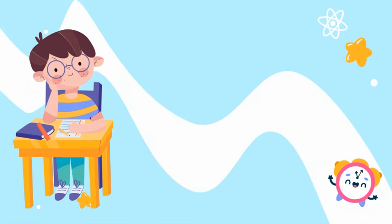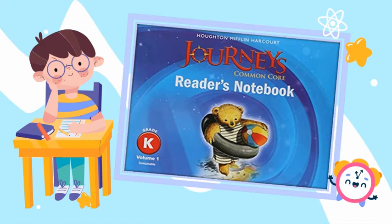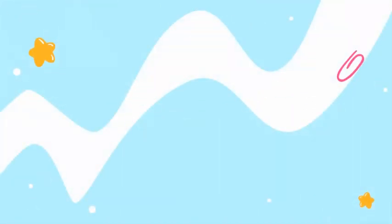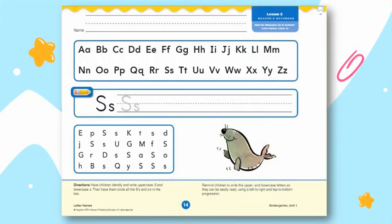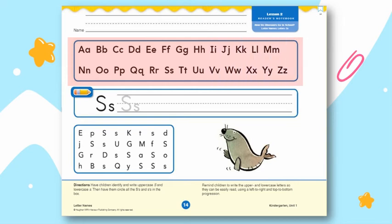Now that we know the letter S and its sound, let's grab our Journey's Reader's Notebook and open it to this page. Are we on the same page now? Are you ready? Do you have your pencils with you? Great! So on this page there are four parts. The first one is to write your name — never ever forget to write your name. The second part is to recognize and encircle the letters that we have learned today, the letter S. So where's the letter S? Find it and circle it.